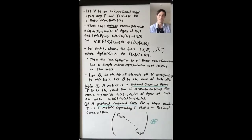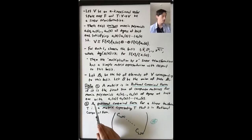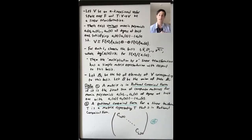So we've seen that every linear transformation has a rational canonical form. Now we'll prove that the rational canonical form is unique.